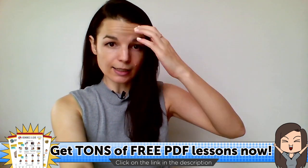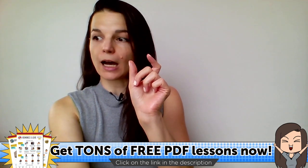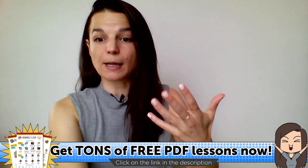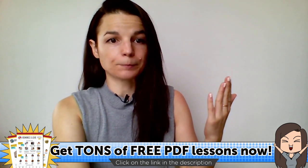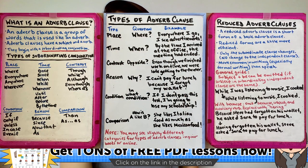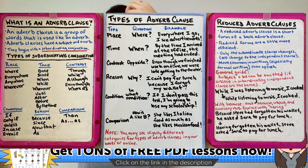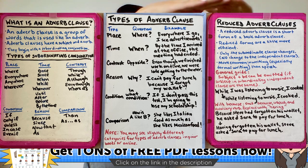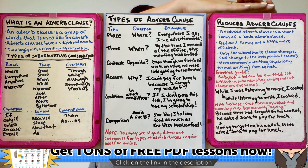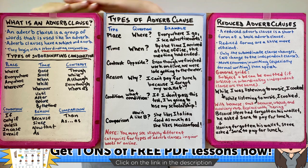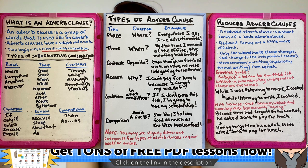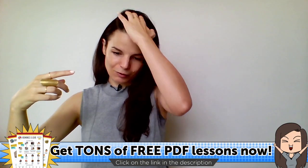This lesson is going to have lots of example sentences and expressions. Let's take a look at today's flow. We're going to look at what is an adverb clause — that's today's key grammar point. We're also going to talk about subordinating conjunctions, then two types of adverb clause for practice, and finally reduced adverb clauses — how to make the short version.